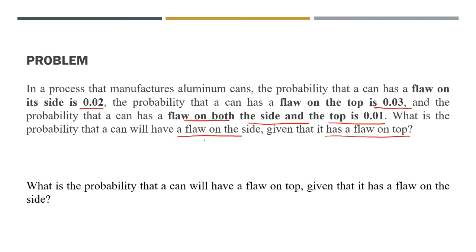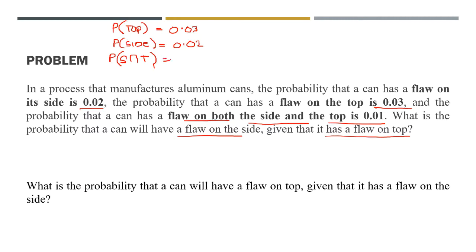We are looking for the probability that it has a flaw on the side if it has a flaw on top. Let's determine our givens first. We have P(top) = 0.03, P(side) = 0.02, and the flaw on both side and top — P(side∩top) = 0.01. This inverted U signifies the common data between the two events. We are looking for the flaw on the side given that it has a flaw on top.